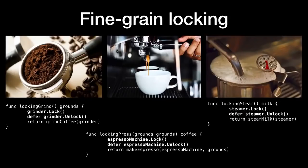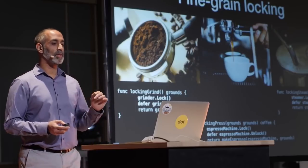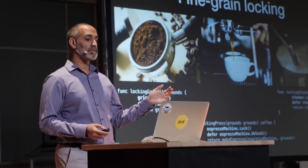In the real world, different people can use different machines simultaneously, as long as the kitchen is big enough. One person can use a grinder while another makes espresso, and a third can steam their milk. This is more like a self-serve coffee kitchen where anyone can use any machine — we'll come back to the barista model later. In Go, we can implement this scenario using a mutex for each machine. A goroutine locks the grinder mutex, uses the grinder, then unlocks it, then locks the espresso machine mutex, and so on. Instead of locking the whole kitchen for 4 milliseconds, we're just locking each of the three machines for 1 millisecond each. The fourth phase — making the latte — doesn't need any locks at all.